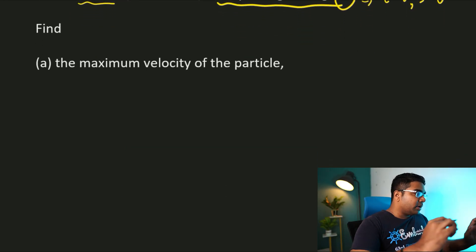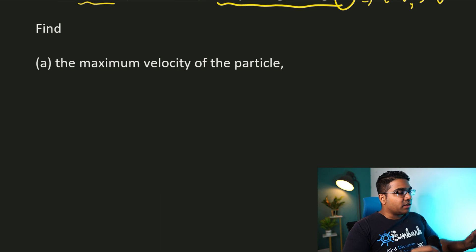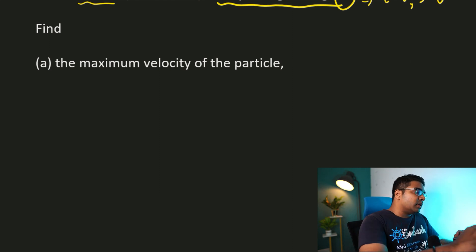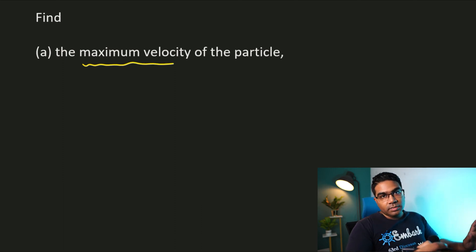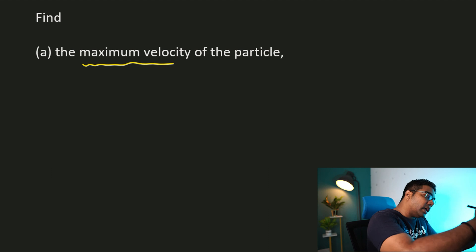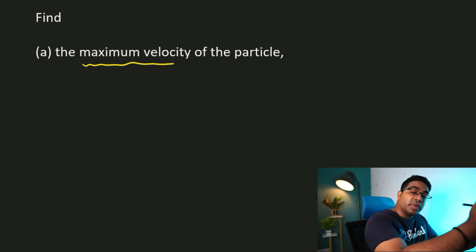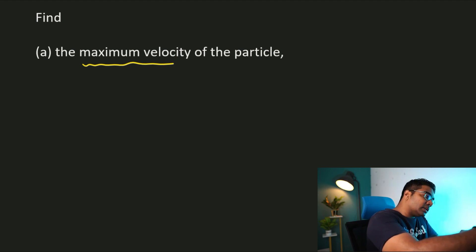Find the maximum velocity of the particle. Whenever you see the word maximum or minimum velocity, the first thing that should come to mind is that at the maximum or minimum velocity, the instantaneous acceleration of the object will be 0. So first we need to make use of the fact that acceleration equals 0.